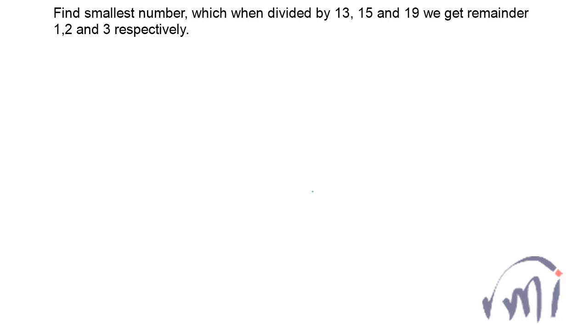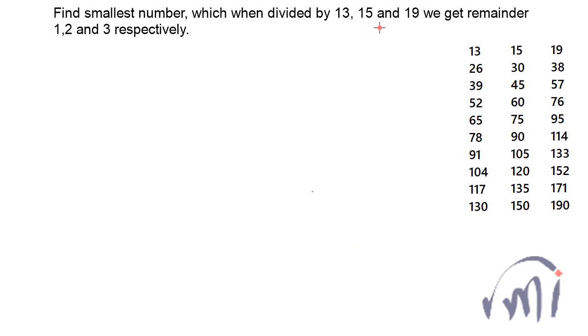So first let me note down the tables of 13, 15 and 19 because that is going to help me in solving this problem quickly. So here first we will take two numbers 13 and 15. A number which when divided by 13 gives the remainder 1 will be of the form 13 multiplied by p plus 1.